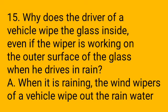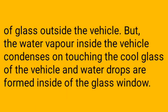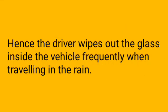Fifteenth question: Why does the driver of a vehicle wipe the glass inside even if the wipers are working on the outer surface of the glass when driving in rain? Answer: When it is raining, the wind wipers wipe out the rain water on the outside of the glass. However, the water vapor inside the vehicle condenses on touching the cool glass windows, forming water drops inside. Hence, the driver wipes the glass from inside the vehicle.